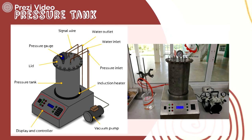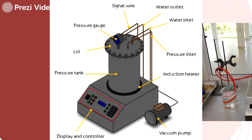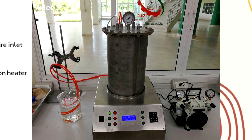This picture shows you a model of the pressure tank system, which consists of a pressure tank, lead pressure gate, vacuum pump, induction heater, display and controller, signal wire, water inlet, water outlet, and pressure inlet. The next picture shows the pressure tank after assembly.